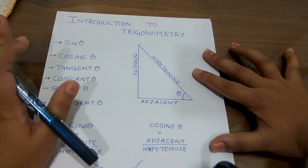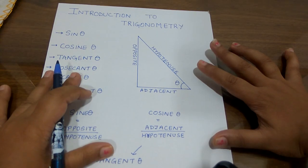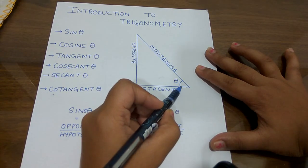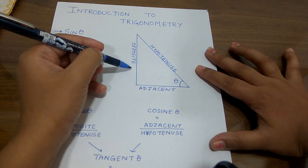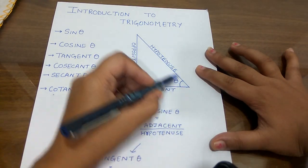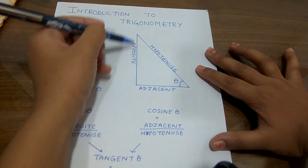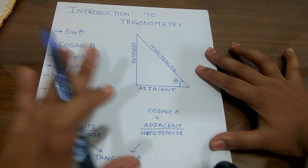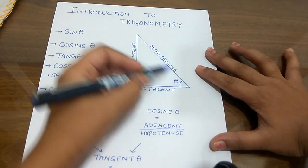They are very simple — just listen. Suppose this is your theta. There are three sides in the triangle. The side opposite to theta we will call the opposite side. The side near to theta we will call the adjacent side. And the longest side is called the hypotenuse. So here is theta — this is the opposite side, this is the adjacent side, and this is the hypotenuse.